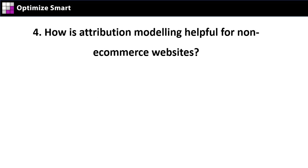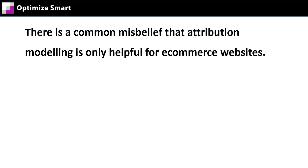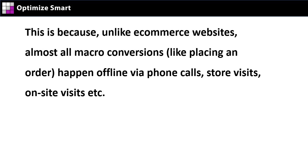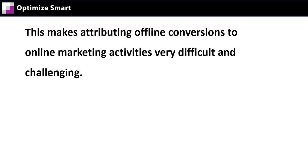How is attribution modeling helpful for non-e-commerce websites? There is a common misbelief that attribution modeling is only helpful for e-commerce websites. In fact, non-e-commerce websites need more attribution modeling insight than e-commerce websites. This is because, unlike e-commerce websites, almost all macro conversions like placing an order happen offline via phone calls, store visits, on-site visits, etc. This makes attributing offline conversions to online marketing activities very difficult and challenging.